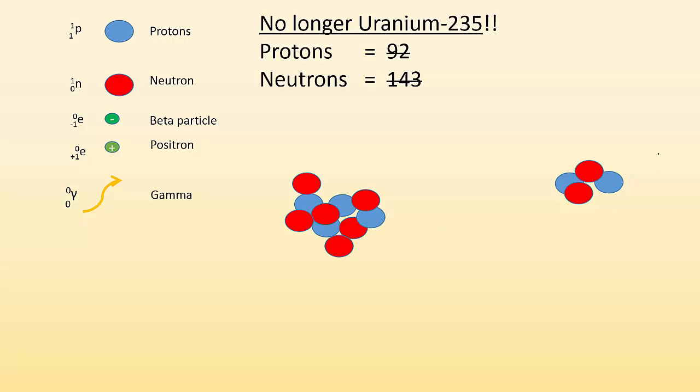So if I take a look at this, it's no longer uranium-235, right? Because the protons, which are the blue spheres, I lost two of them, and the neutrons, which are the red spheres, I lost two of them as well. So basically what happened is I had uranium-235. Remember, the mass goes up top, and I look up uranium has an atomic number of 92. So I know I had 92 protons, and I had a total mass of 235, which tells me that I had 143 neutrons.